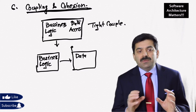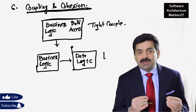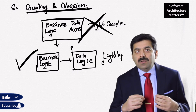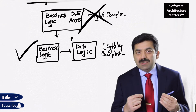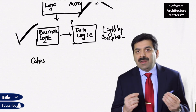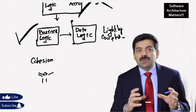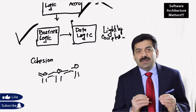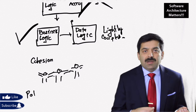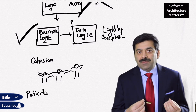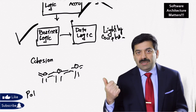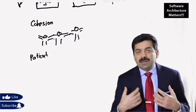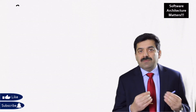Cohesion is how similar the classes are within a package. In a billing application or patient history application, we must make sure that only classes relevant to billing or patient history are in that package. If there are inventory classes, they should go into a different package. We need to keep related code together in the package as much as possible. That way, maintenance is easy — if you need to find code related to inventory, you just go to the inventory package or namespace and make changes there.